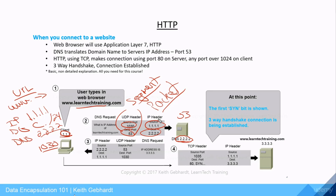So far you're seeing a couple of different things for our data encapsulation process — our Layer 4 segment getting its port information, and our Layer 3 packet carrying the IP address information. Once the DNS server resolves the domain name learntechtraining.com to the required IP address, it sends that information back to our computer.